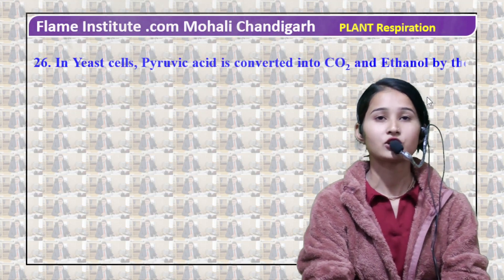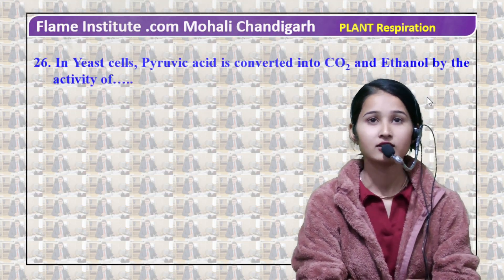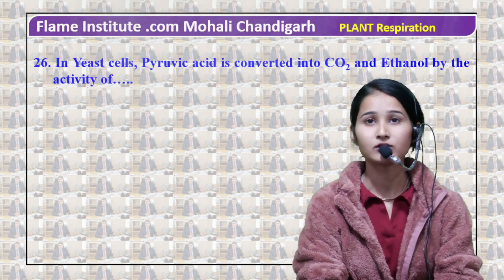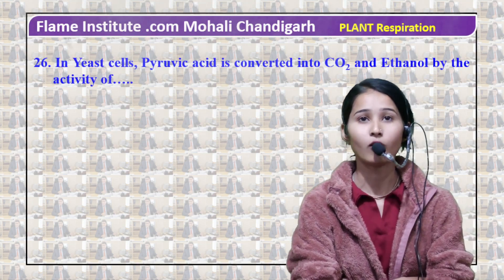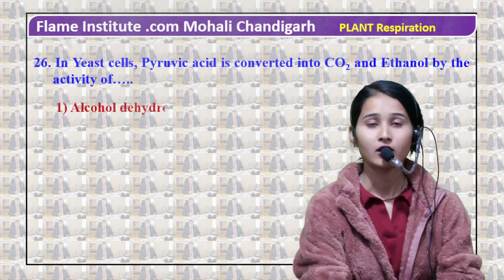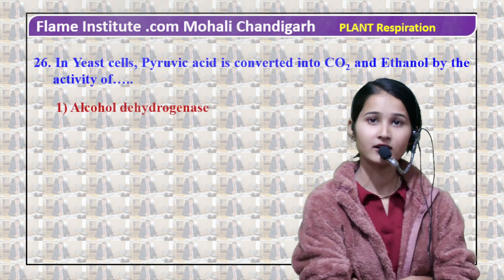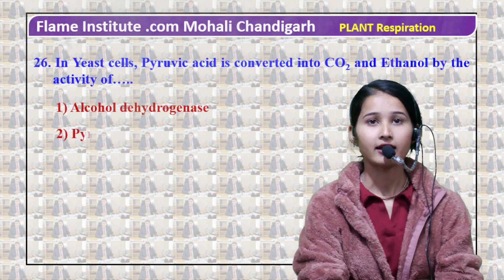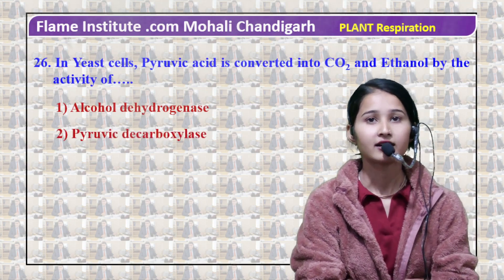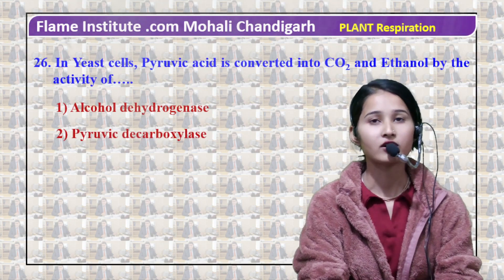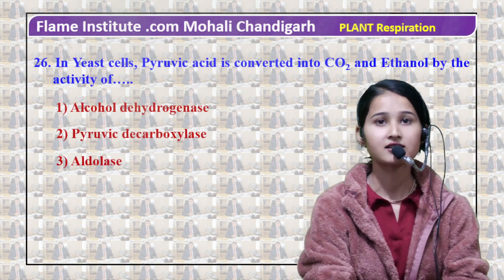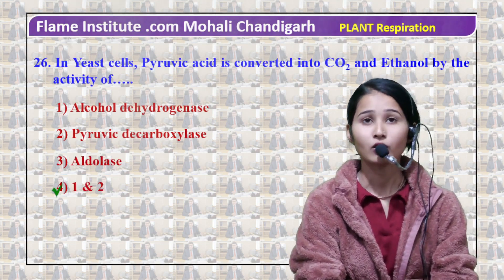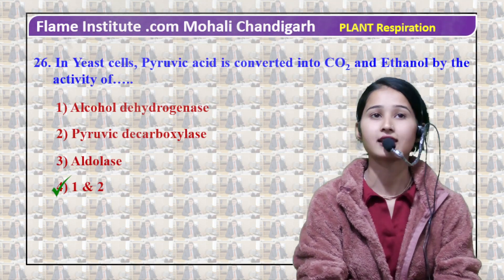Our next question is: in each cell, pyruvic acid is converted into CO₂ and ethanol by the activity of — the options are: (1) alcohol dehydrogenase, (2) pyruvate decarboxylase, (3) aldose, and (4) first and second. The answer is first and second.